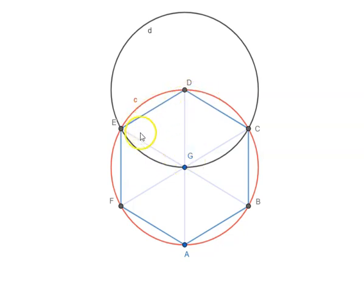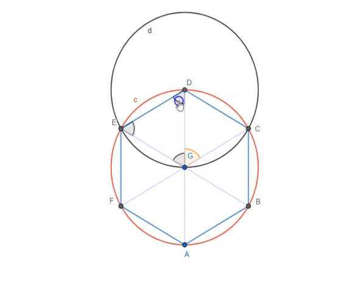That means it is not only an equilateral triangle but also an equiangular triangle. All three angles are equal to each other, their sum is two right angles — that is 180 degrees. Now let us look at angle CGD. This triangle will also be an equilateral and equiangular triangle based on the same logic. So this angle will also be one third of two right angles, that means 60 degrees.